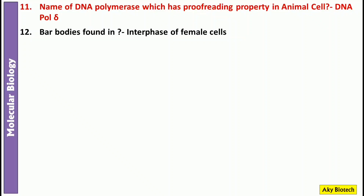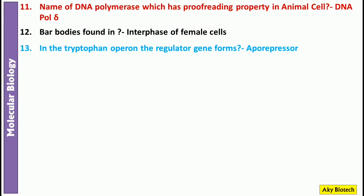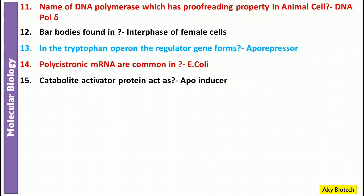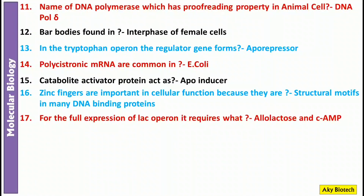Question 12: Barr bodies are found in the interphase of female cells. Question 13: In the tryptophan operon, the regulator gene forms an aporepressor — this is also an important question. Question 14: Polycistronic mRNA is common in E. coli. Question 15: Catabolite activator protein acts as a positive inducer. Question 16: Zinc fingers are important in cellular function because they are structural motifs in DNA binding proteins.